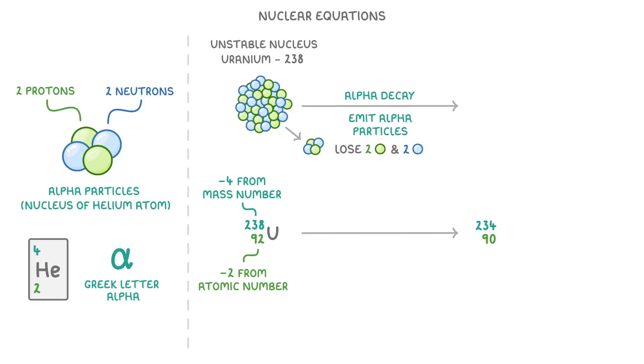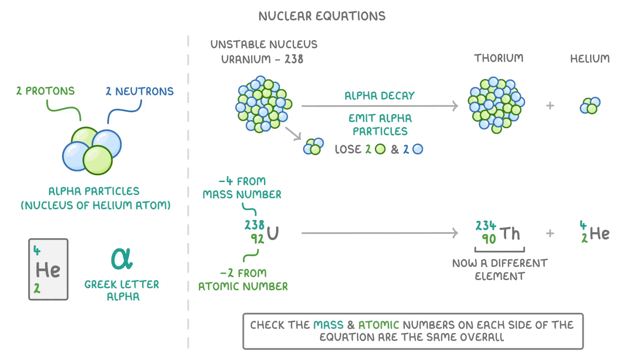Because the atomic number has changed, it will now be a different element. So we'd have to check the periodic table to find out that it's now thorium. The last thing is to add our helium that was emitted, and then just double-check that the mass and atomic numbers on each side of the equation are the same overall.